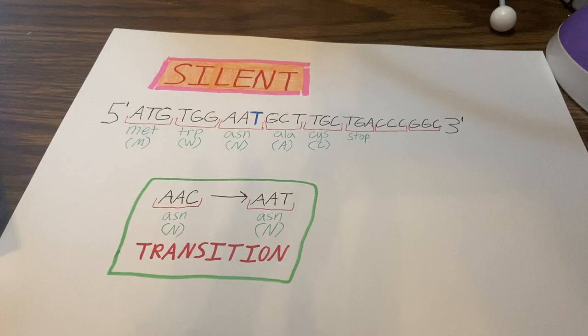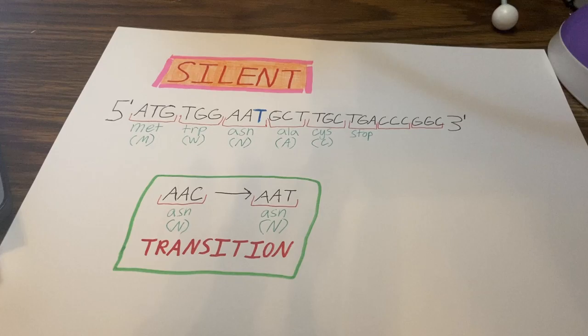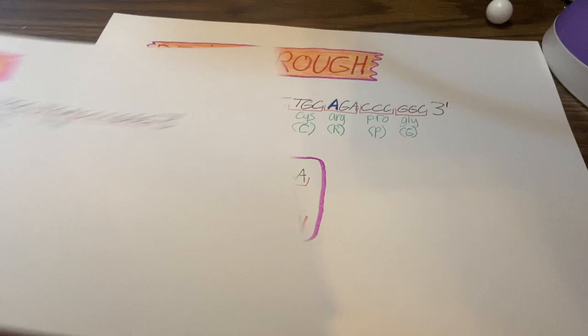Now after going through a transition, the amino acid has not changed because AAU codes for the same amino acid as AAC. This is why the mutation is considered to be silent, because there is no change in the translation.